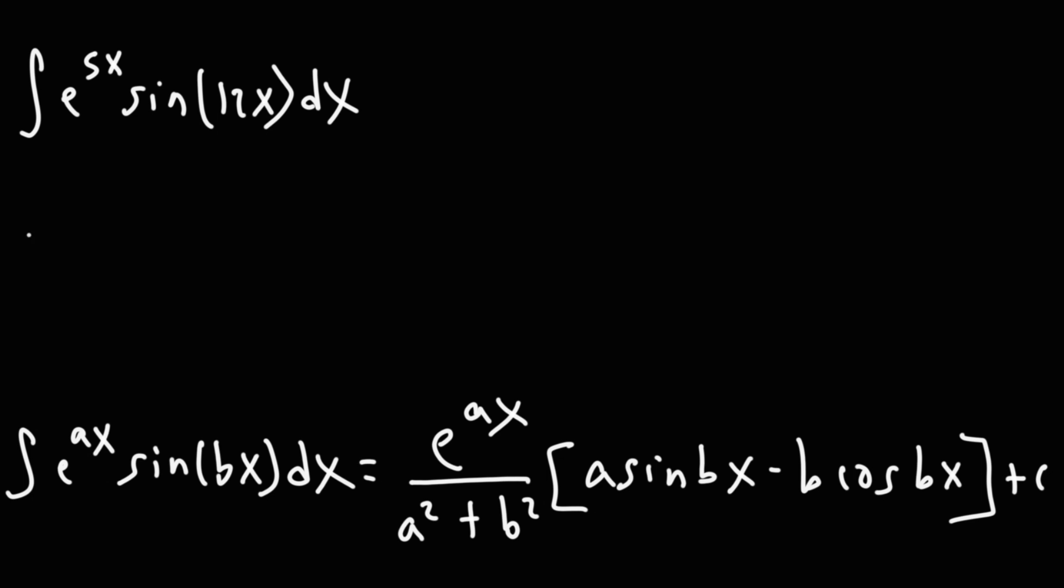So for this particular problem, we can see that a is 5 and b is 12. So once we identify the values of a and b, we can quickly get the answer.